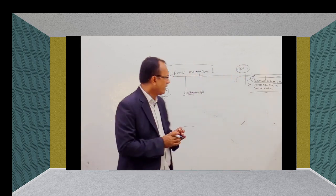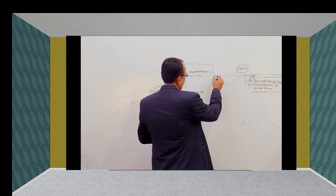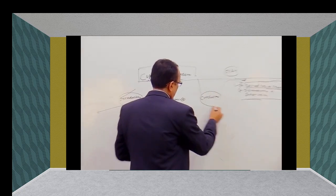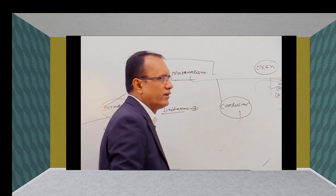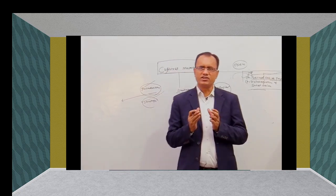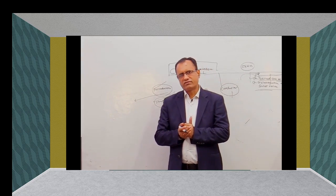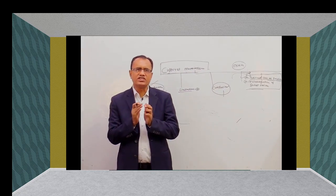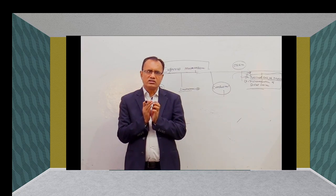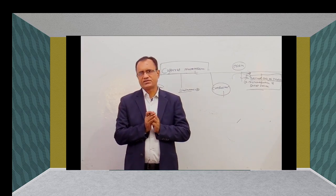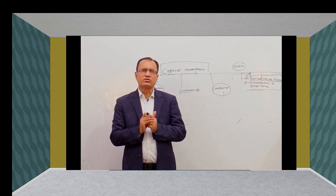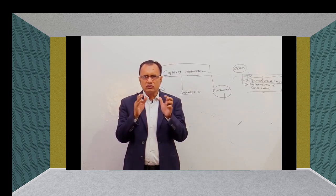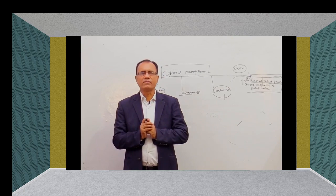And after that, in the conclusion you have to write: therefore, there are some limitations about the theory of cultural materialism, but in spite of these limitations, this strategy gives us new insight for the understanding of society and culture. Through that, you can write your answer.